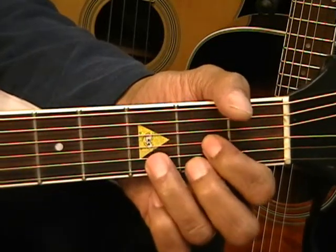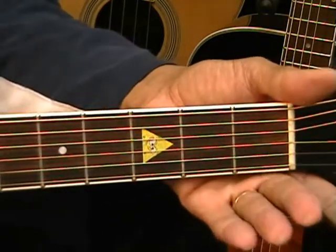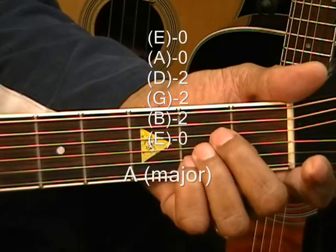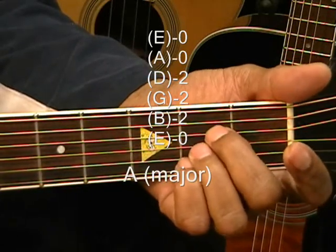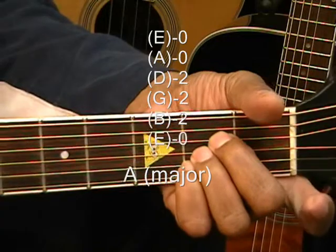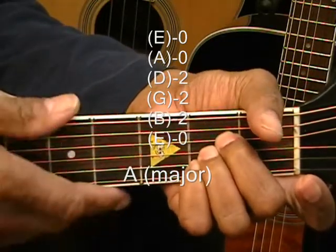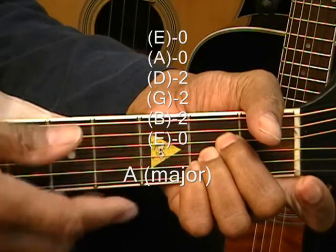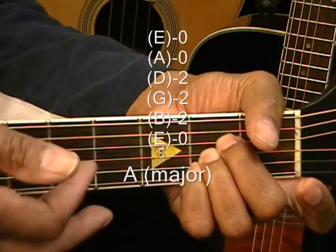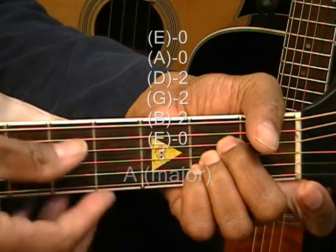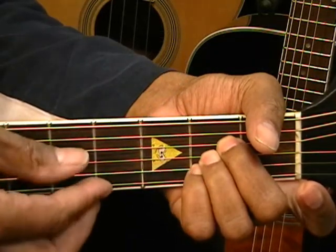Next is A major. We're going to go to the second fret and place the middle finger, ring finger, and pinky finger on the D, G, and B strings. Everything else is open, and we want to strum that from the A. We're going to use that low A and come up with the index finger like that.